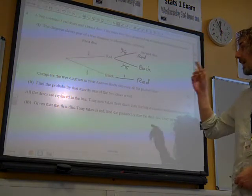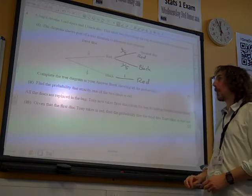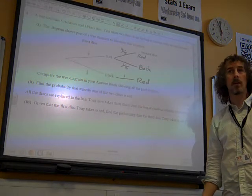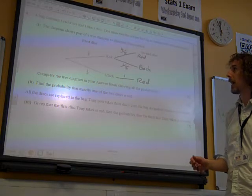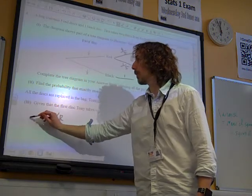Find the probability that exactly one of the two discs is red. Well, that seems to happen in two out of our three options. So we'd have to add those two probabilities together. If it was red and then black, this is for part two.